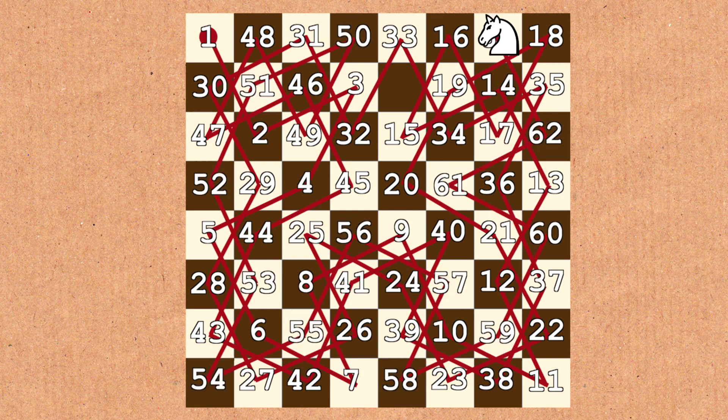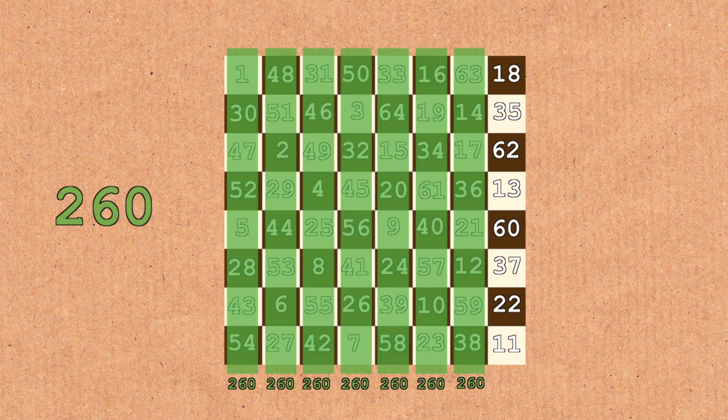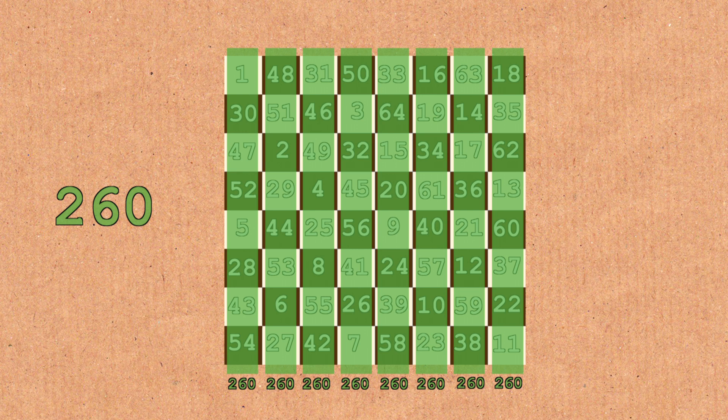Seems pretty normal. And here are the numbers, and have a look. Each column here adds up to 260, as does each of the rows.